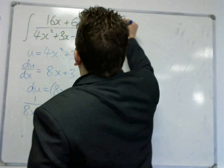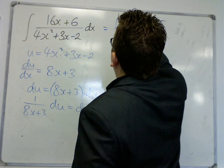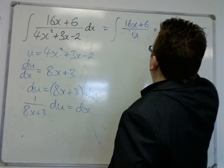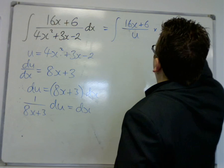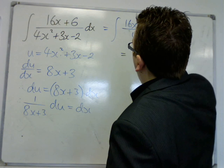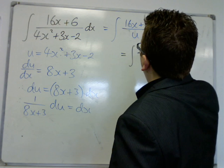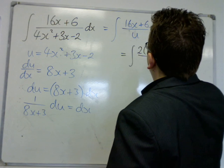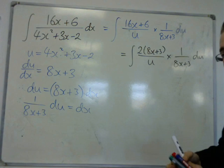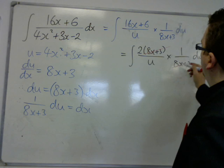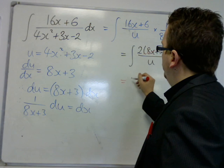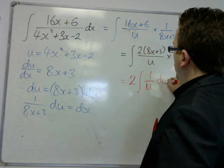So, now what we have is the integral of 16x plus 6 over u. And dx is 1 over 8x plus 3 du. Now, let's tidy this up. Because that top of the fraction here, the numerator, is 2 lots of 8x plus 3. So, the 8x plus 3 and the 8x plus 3 here can cancel. Because it's 1 divided by itself. The 2 can be brought outside of the integral.